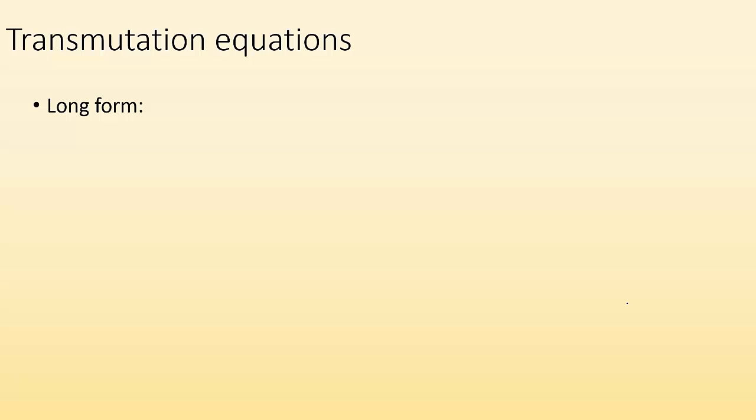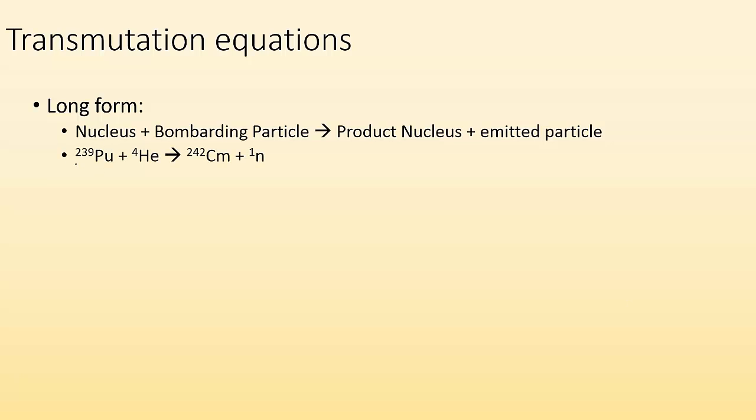All right. So transmutation equations. We got a long form, which is going to be what you're familiar with. We have a nucleus and a bombarding particle giving us a product nucleus and emitted particles. So here's an example. We have our nucleus. We have our bombarding particles. And we end up with our new nucleus and what's being emitted. Right. So that's an example of the long form.